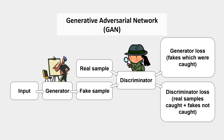One network, the discriminator, sees images which are either real or fake. It must try to determine which is which. The other network, the generator, sees inputs which give it inspiration to create fake images. It must fool the discriminator into thinking that its images are real.